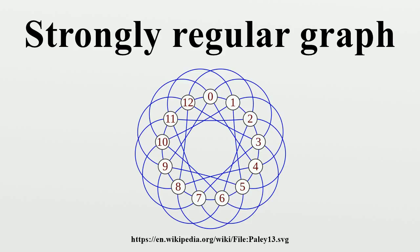A graph of this kind is sometimes said to be an SRG. Strongly regular graphs were introduced by Raj Chandra Bose. Some authors exclude graphs which satisfy the definition trivially, namely those graphs which are the disjoint union of one or more equal-sized complete graphs and their complements, the Turan graphs. The complement of an SRG is also strongly regular. A strongly regular graph is a distance-regular graph with diameter 2, but only if mu is non-zero.